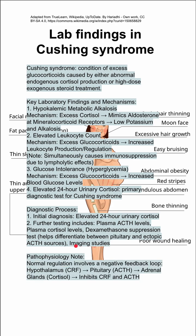Some notes on the pathophysiology: there is normal regulation of cortisol in the body that includes a negative feedback loop. The hypothalamus makes CRF, which signals to the pituitary to release ACTH, which signals to the adrenal glands to release cortisol, which then has an inhibitory effect on CRF and ACTH.